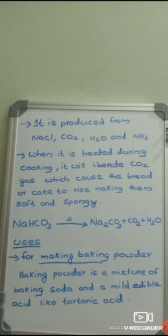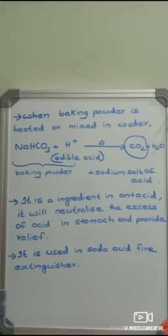Baking soda is used for making baking powder, which is also commonly used while making cakes. Baking powder is a mixture of baking soda and a mild edible acid like tartaric acid. When baking powder is heated or mixed in water, it also liberates carbon dioxide gas, which makes food items soft and fluffy.